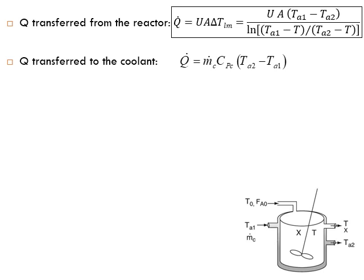We now have several useful equations. Q transferred from the reactor can be calculated from heat transfer as Q̇ = U * A * ΔT_lm. Q transferred to the coolant is found by measuring TA1 and TA2 — the temperatures entering and leaving the jacket — giving a good indication of how much heat was absorbed by the coolant. These two Q values must be equal.